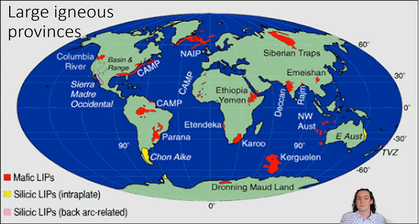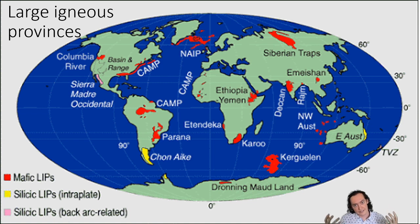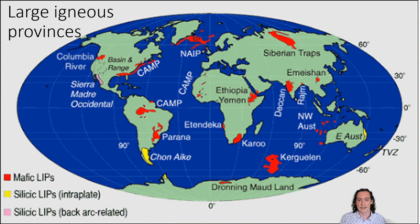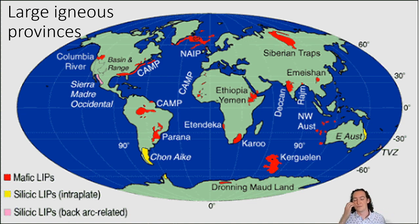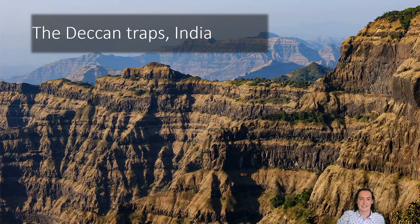Once these flood basalts cool down and produce igneous rocks, we call them large igneous provinces, essentially because they are very large areas of volcanic rock. There are lots of them dotted all over the Earth, and each one had a dramatic impact on both the climate of the Earth at the time, the direction life was going, and the shape of the Earth's surface itself.